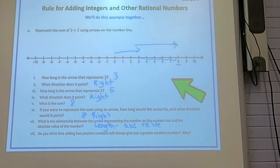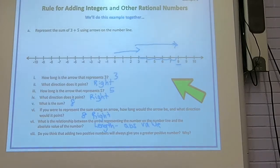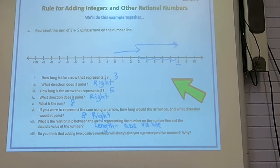Here's what I call a thinking question — you have to think about it. Do you think that adding two positive numbers will always give you a greater positive number? You might think of adding zero to something, but remember, zero is neither positive nor negative, so it doesn't count. So yes, it will always be positive because both are going right, so it has to end up positive.